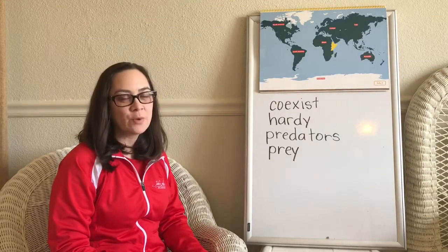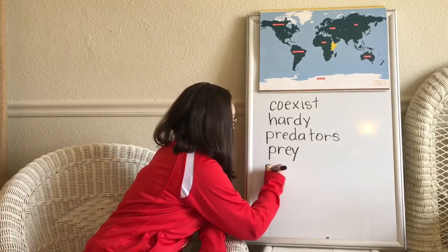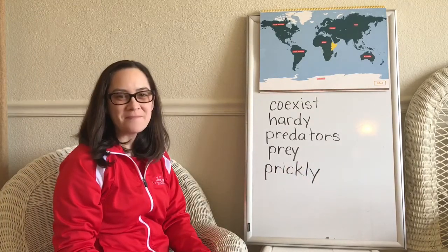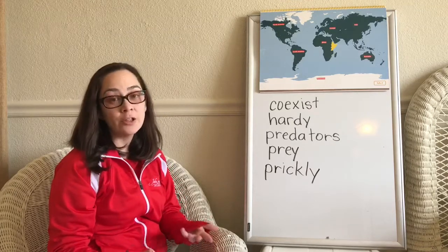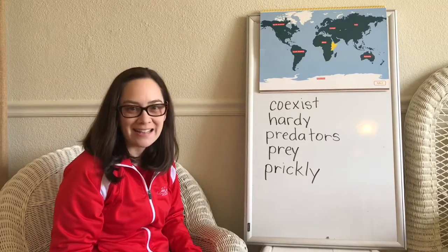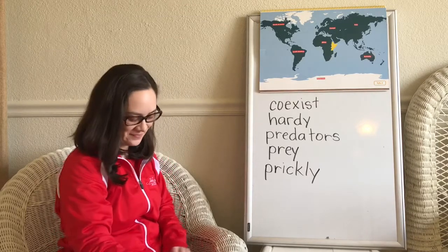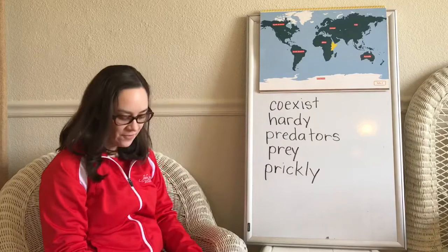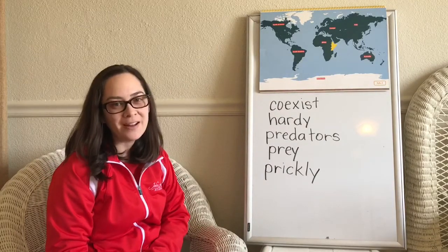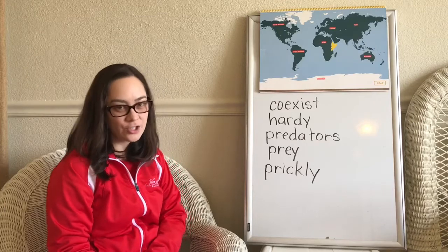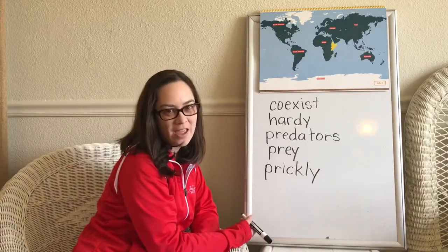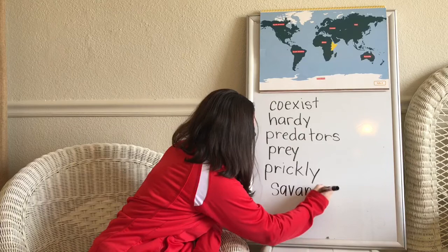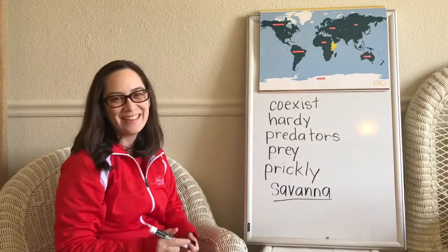Our final vocabulary word for this lesson is prickly, which means small and sharp. For example, the cactus's spines are prickly. Our goal today — our purpose for listening — is to find out how the East African savannah habitat may be the same or different from the Arctic tundra and the Sonoran Desert. I'm going to write the word savannah for you today.